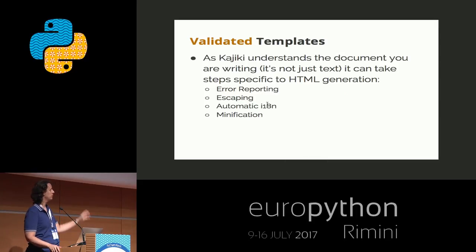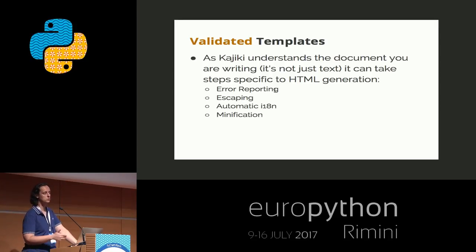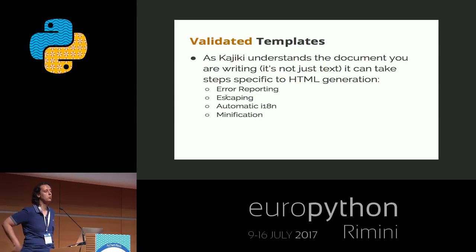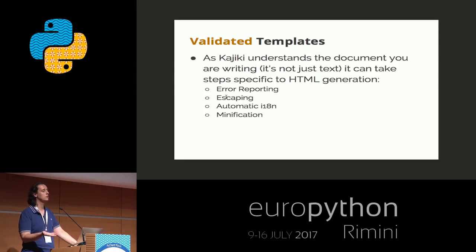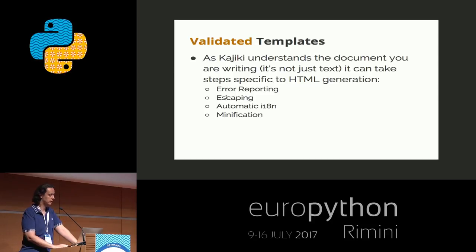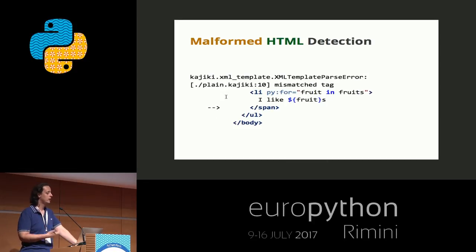Some of the features I already explained: error reporting — whenever a Kajiki template fails, you can inspect it and see what failed. You get automatic escaping, so you don't have to remember to remove any character from the input that might break your HTML or cause JavaScript injection in your template. It does automatic translation for you, and it automatically minifies the result if you want. It's an option that's not always enabled, but there are people who care, and it will minify the HTML for you.